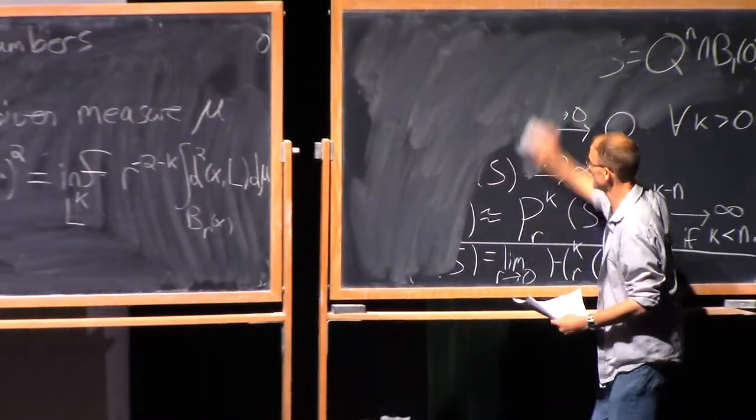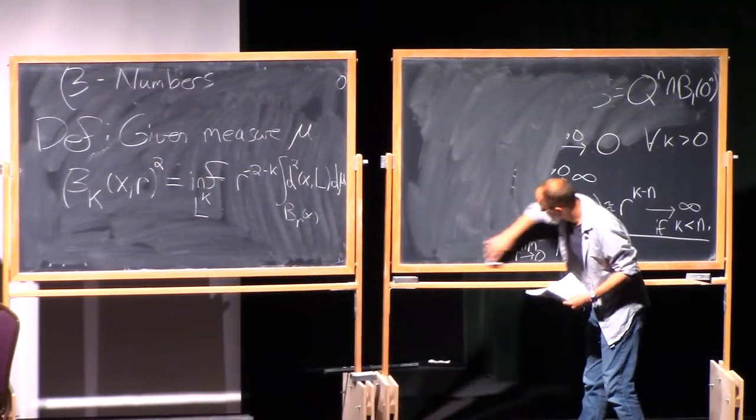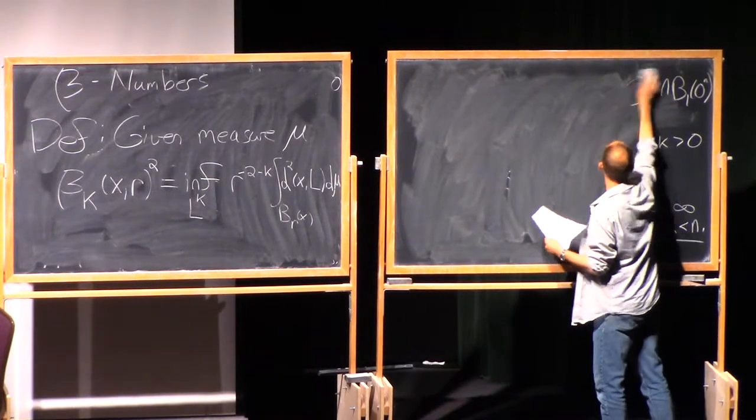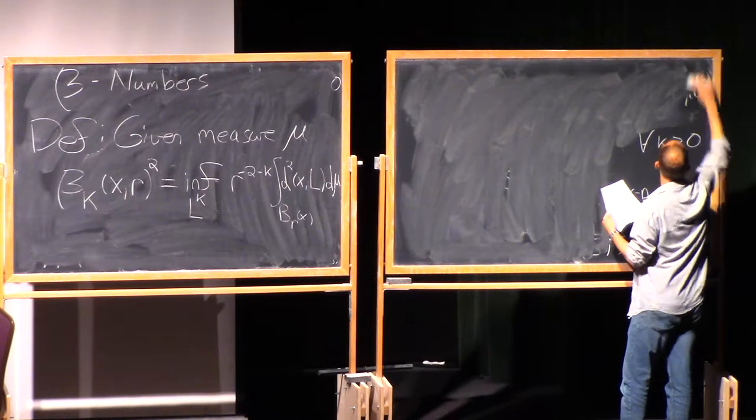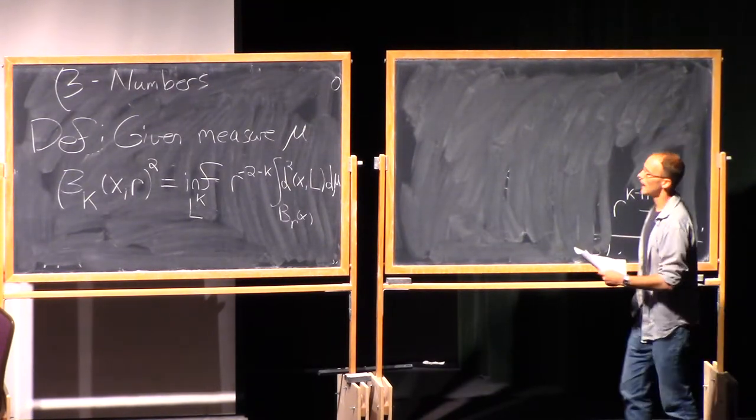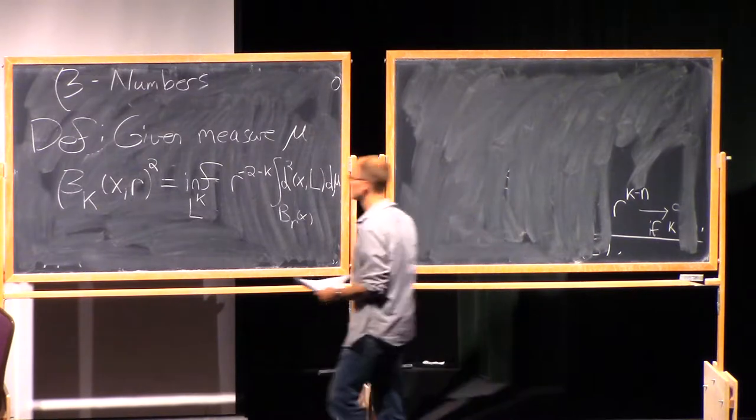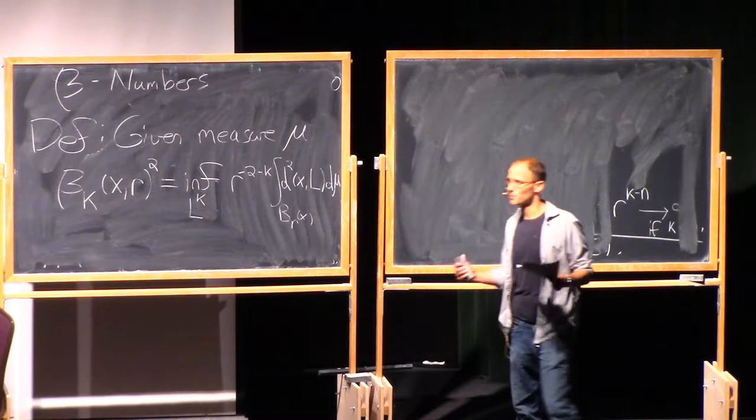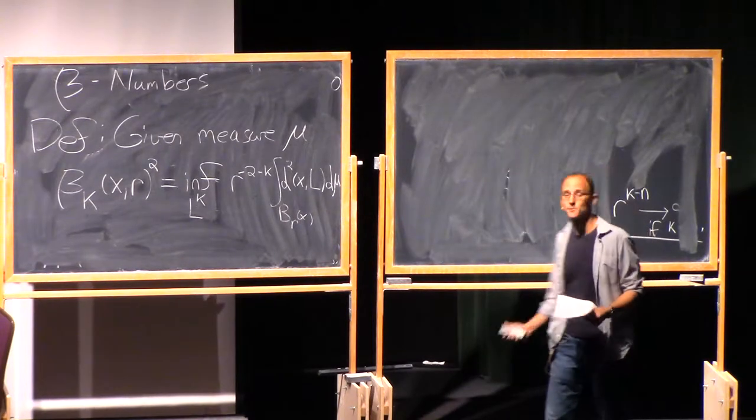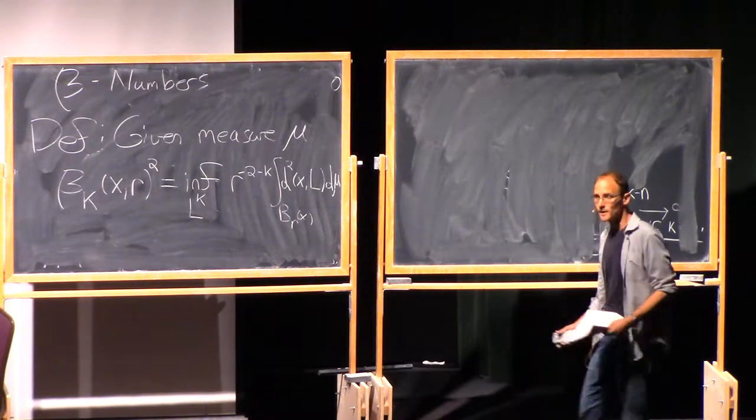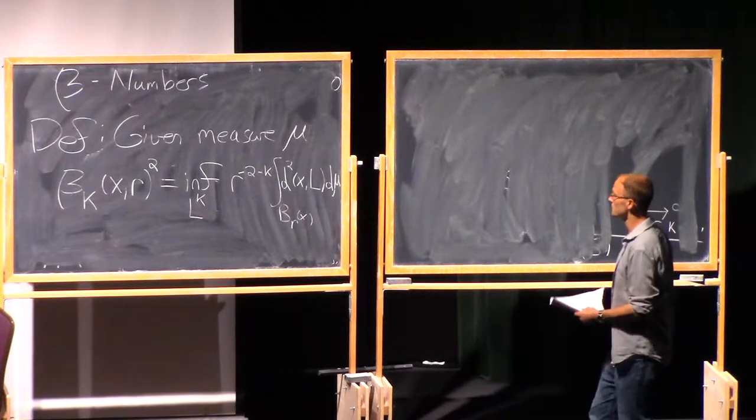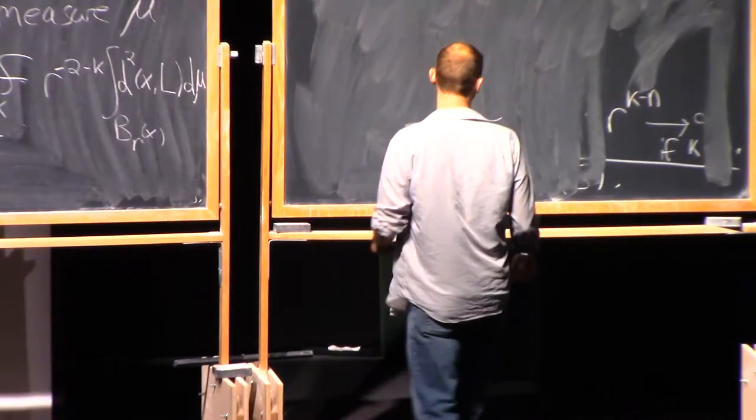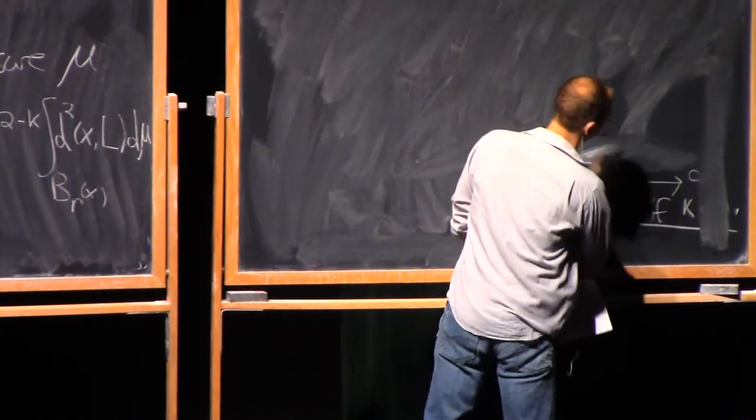And we'll do some examples. I'm going to do three examples. And these examples are meant to ask the question: imagine I have a completely random measure mu, and I know something about the k-dimensional beta numbers. Maybe it's super nice, maybe it's zero, or maybe it's decaying polynomially. What can we and can't we say about mu?